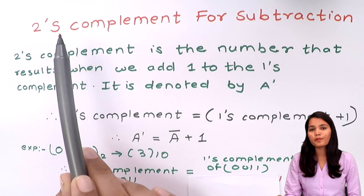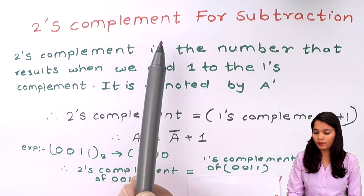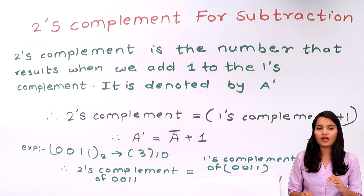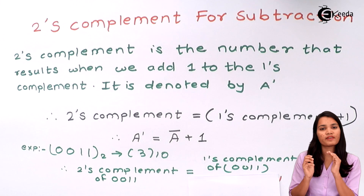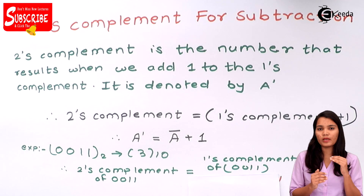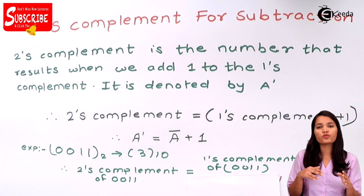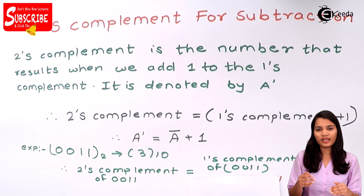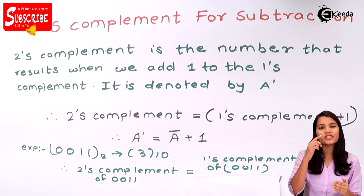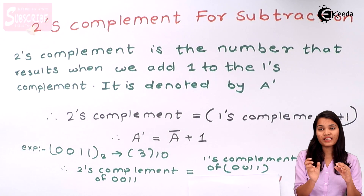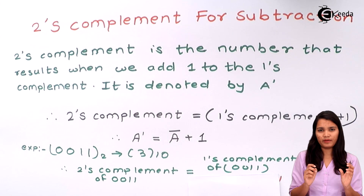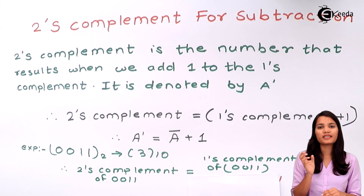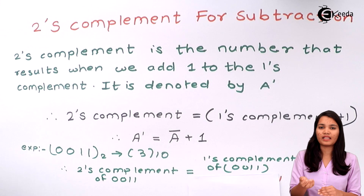Now, what do you mean by 2's complement for subtraction? Watch this very carefully. In the 1's complement, what we used to do is find out the opposite of every digit — that is the 1's complement. But 2's complement is a little bit different from this.